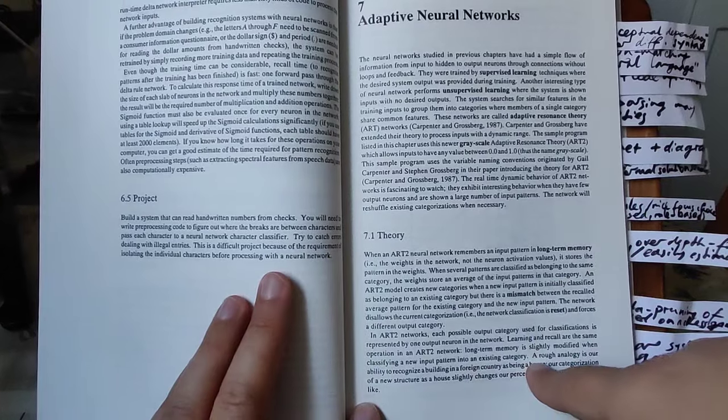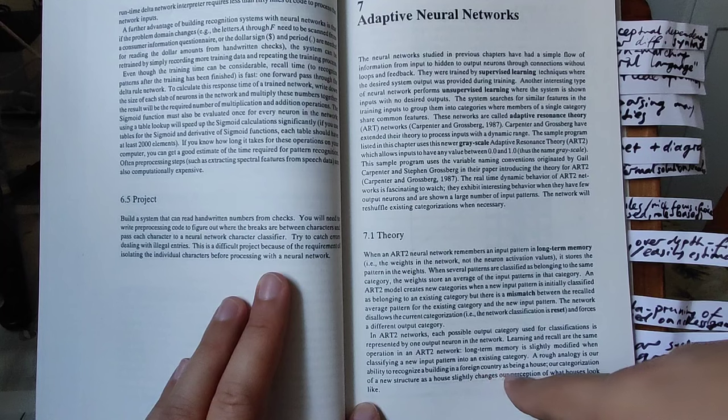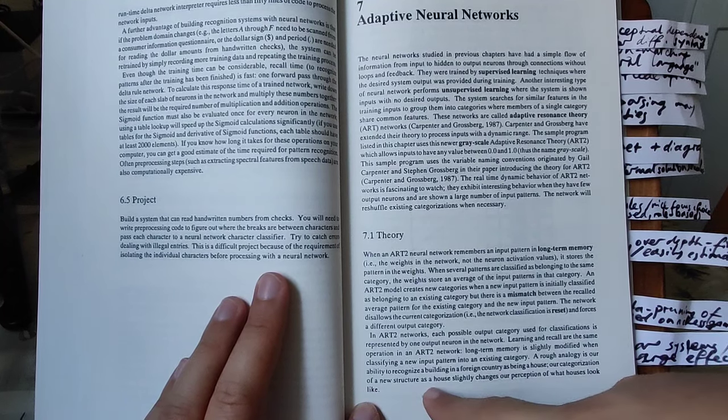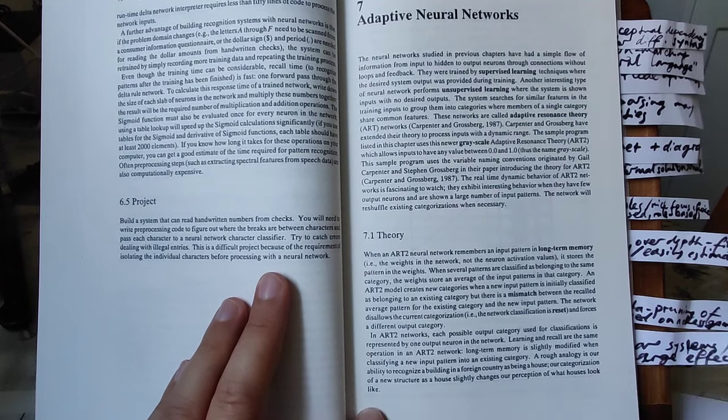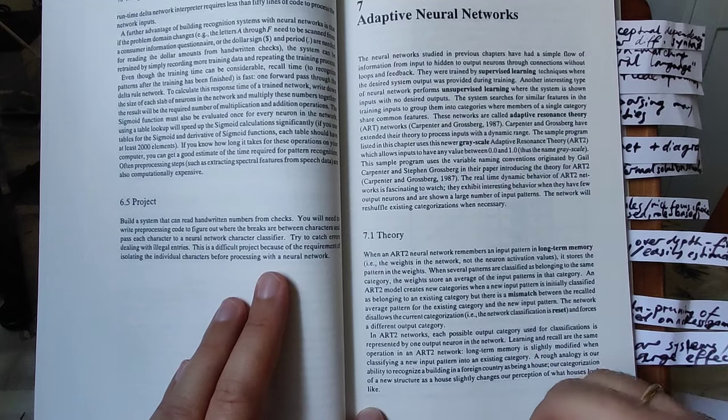These are networks which are more geared towards categorizing classes of patterns by averaging inputs over certain patterns. He makes a rather good comparison: a rough analogy is our ability to recognize a building in a foreign country as being a house. Our categorization of a new structure as a house slightly changes our perception of what houses look like.